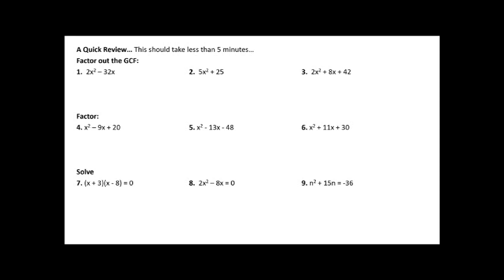Assuming you've already paused and tried these, let's check the answers. For question number one, I see 2x squared and 32x. I'm looking for the greatest common factor — the largest thing that can divide into both monomials. Both 2 and 32 can be divided by 2, and x squared and x can both be divided by x. So I factor out a 2x: 2x times x gives 2x squared, and 2x times negative 16 is negative 32x.